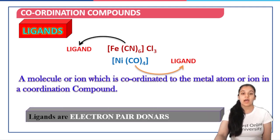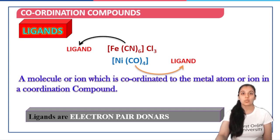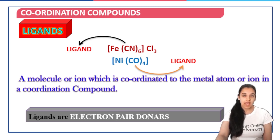Ligands are basically electron pair donors. We have seen in the last lecture that ligands possess a lone pair of electrons which they donate to the metal ions, which are electron-deficient species — that is, they act as Lewis acids. There is a coordinate bond that is formed between the ligand and the metal ion.